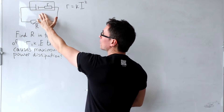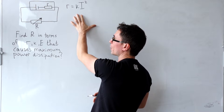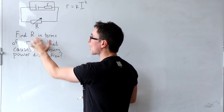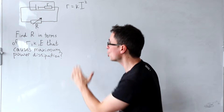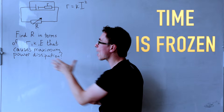We have this circuit with internal resistance R that depends on the current with this expression. We also have a variable resistor and we need to find R in terms of these variables so that the maximum power is dissipated. Anytime in a question we're looking for a maximum or a minimum, this is a clue that we'll need to differentiate and set that derivative equal to zero and find the corresponding value.